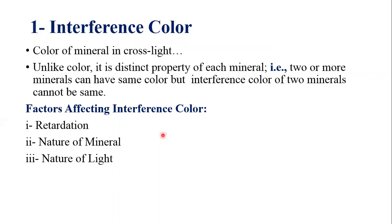What is interference color? It is the color of a mineral in cross-polarized light. Remember that interference color is entirely different from the color of a mineral observed in plane polarized light. Unlike color in PPL, interference color is a distinct property of each mineral, which means that two or more minerals can have the same color, but the interference color of two minerals cannot be the same.